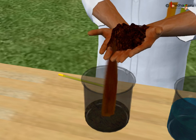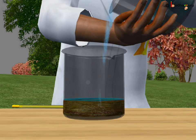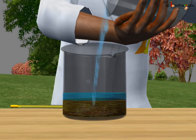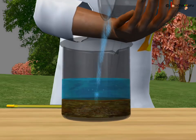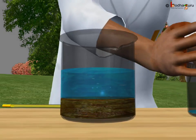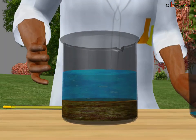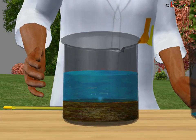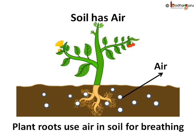Now, we take some soil in the container and pour water. Look, some air bubbles are forming. It shows that the soil contains air. When we pour water, the air which was trapped in small gaps between the soil particles escapes in the form of bubbles. This air in soil provides oxygen to the roots of the plant for breathing.